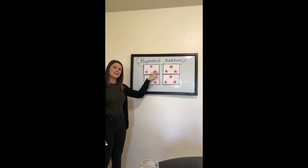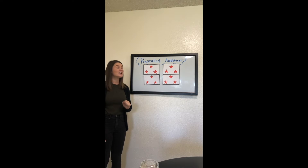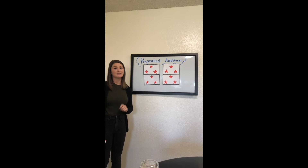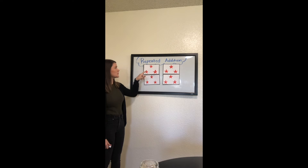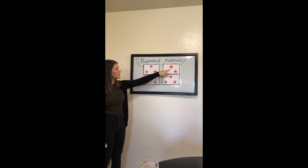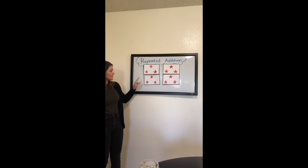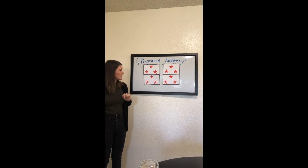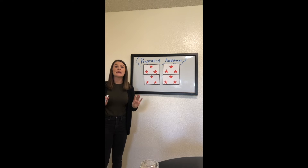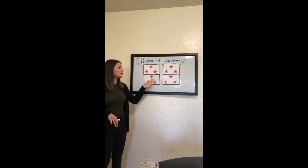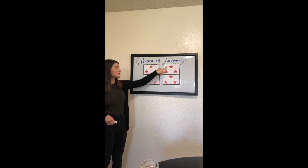Okay, so now we have a new example problem. The first thing we need to do is check and see if the groups are equal so we can see if we can add them using repeated addition. Let's count: first group — one, two, three. Second group — one, two, three. Third group — one, two, three. Fourth group — one, two, three. We can add them because all four groups have three stars in them.